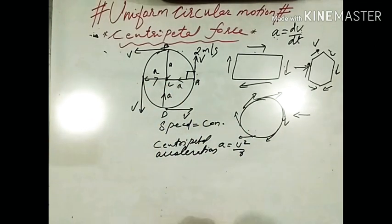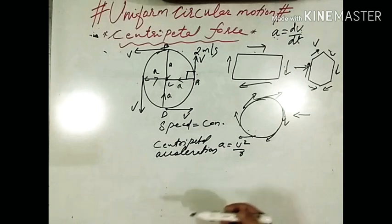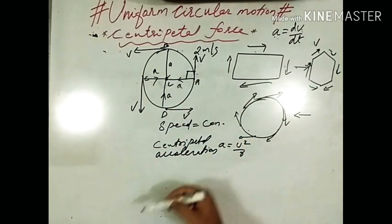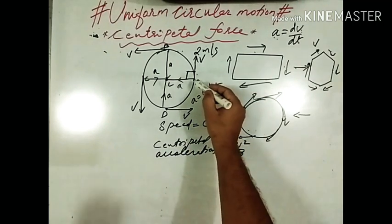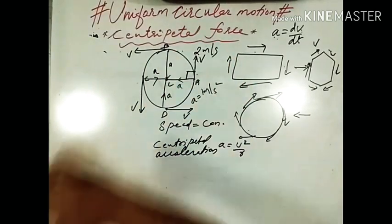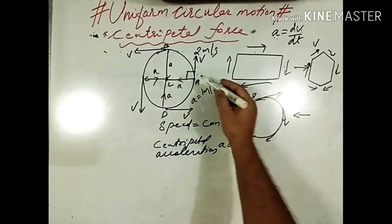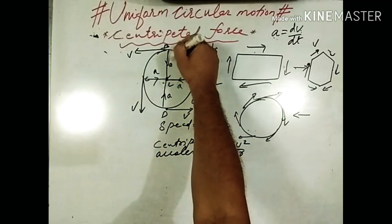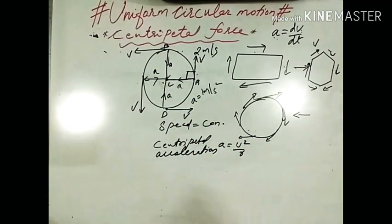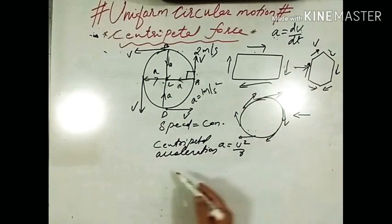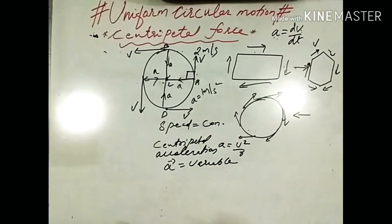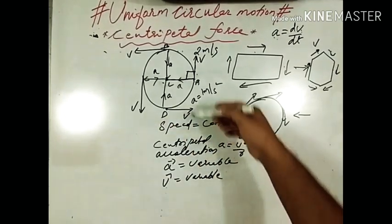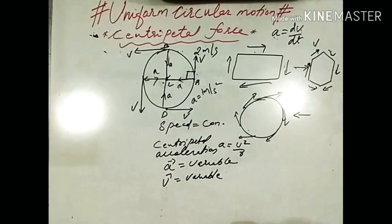The direction of centripetal acceleration is always towards the centre. You may ask whether this acceleration is changing. The magnitude of the acceleration — say, 1 metre per second squared — remains constant at every point. But the direction changes: at different points it is directed towards the left, downward, right, and upward. So at each point of the circle the direction of acceleration changes while the magnitude remains constant. Therefore, centripetal acceleration is also a variable quantity. Similarly, velocity is also variable in uniform circular motion.